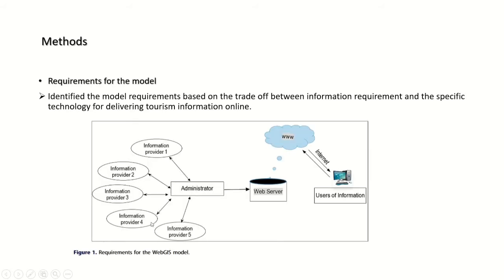The web GIS model requirements have three major sections: administrator, web server, and users of information. In the administrator part, information providers supply different kinds of information. This information is transferred to the web server, which processes it into a user-friendly form for the users of information.